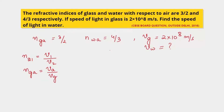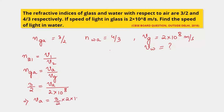The refractive index of glass with respect to air is given as 3/2, and the velocity of light in glass is given as 2×10⁸ m/s. This gives us the velocity of light in air as 3/2 × 2×10⁸ = 3×10⁸ m/s. So we have found the velocity of light in air.